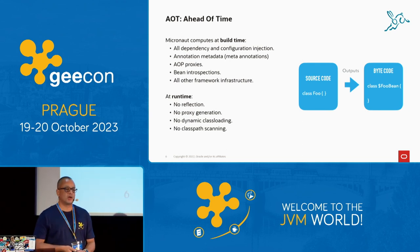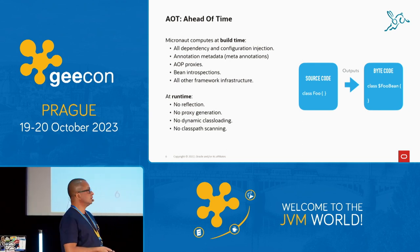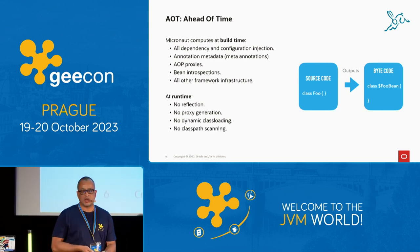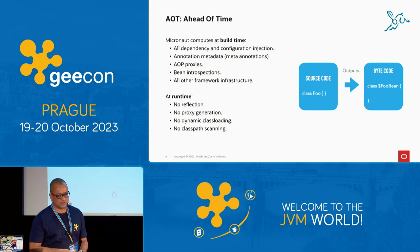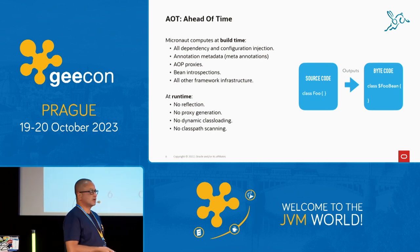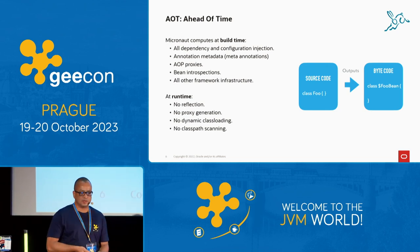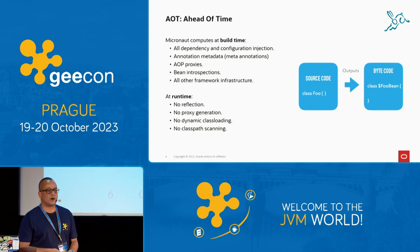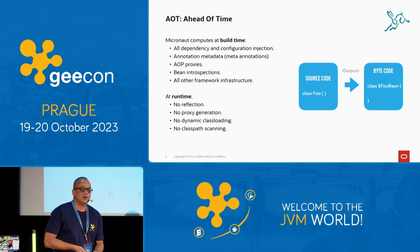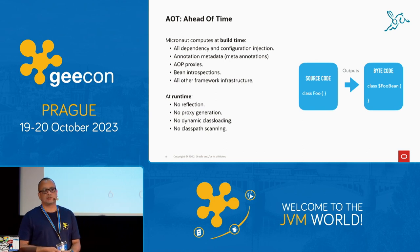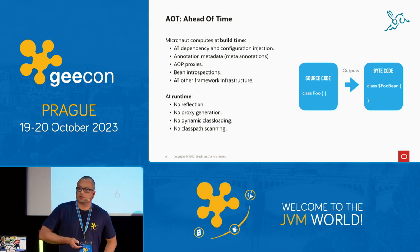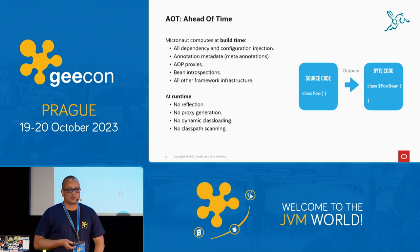At runtime, the benefits of this approach mean no reflection, no proxy generation, no dynamic class loading — class loading is simplified, no classpath scanning. Those things would otherwise affect overall application performance and possibly trigger GC executions. This is addressed by design in Micronaut.